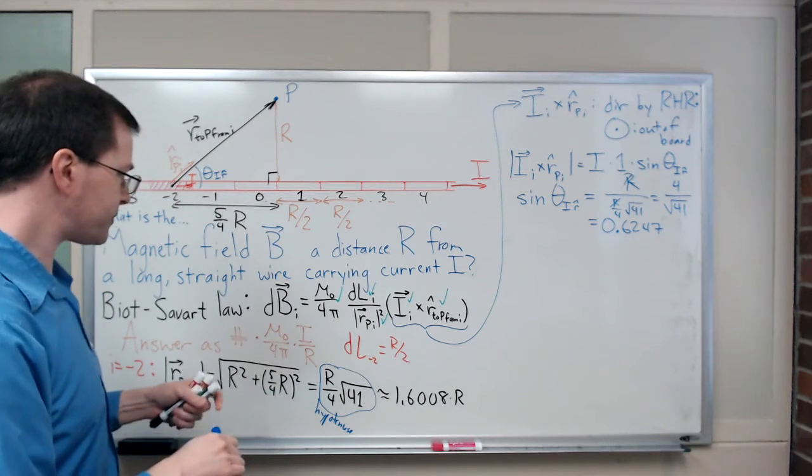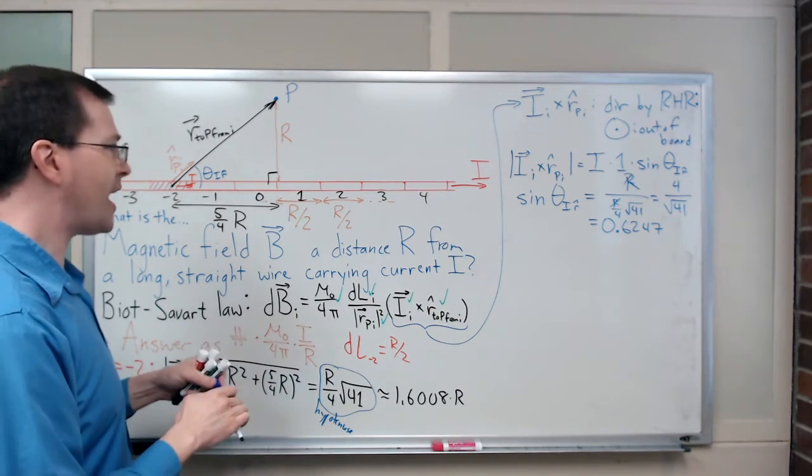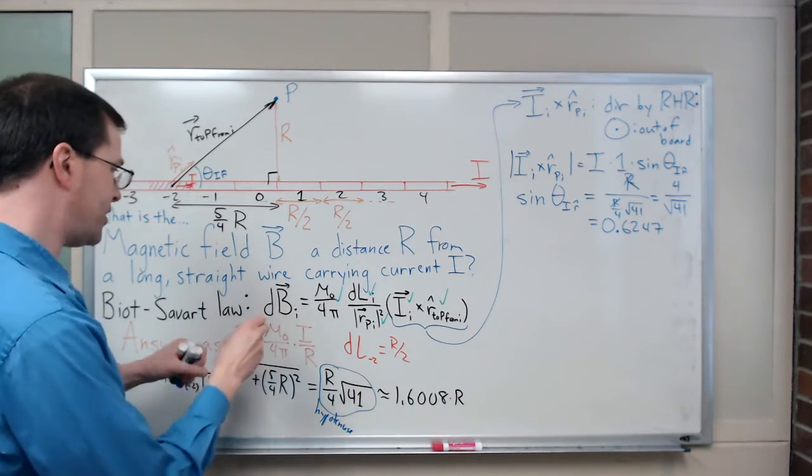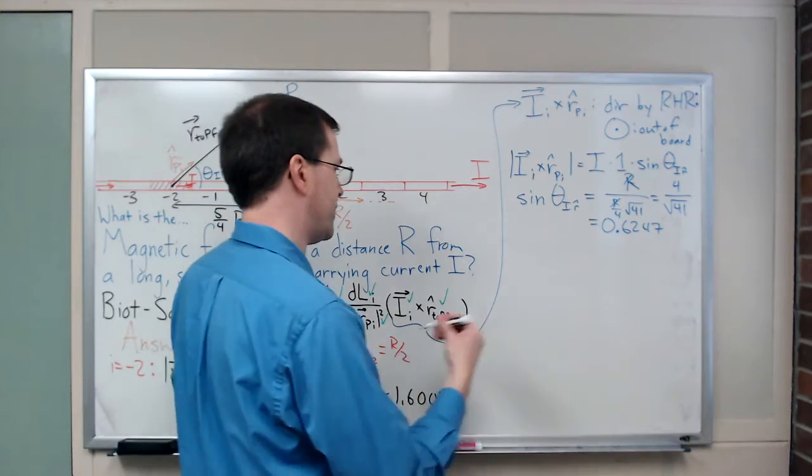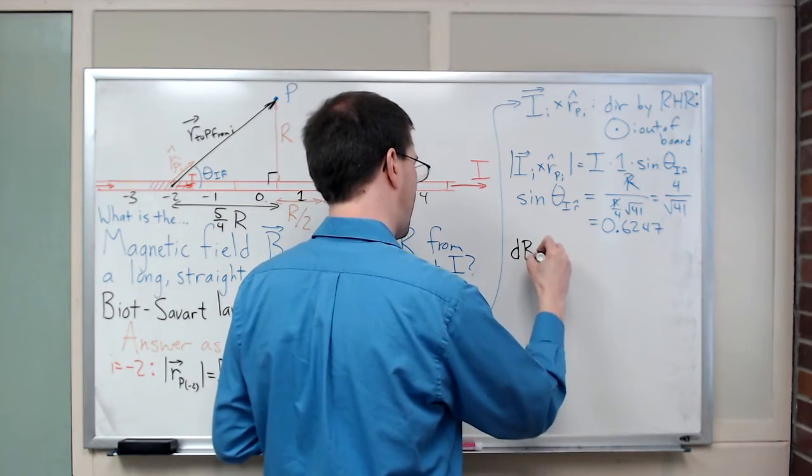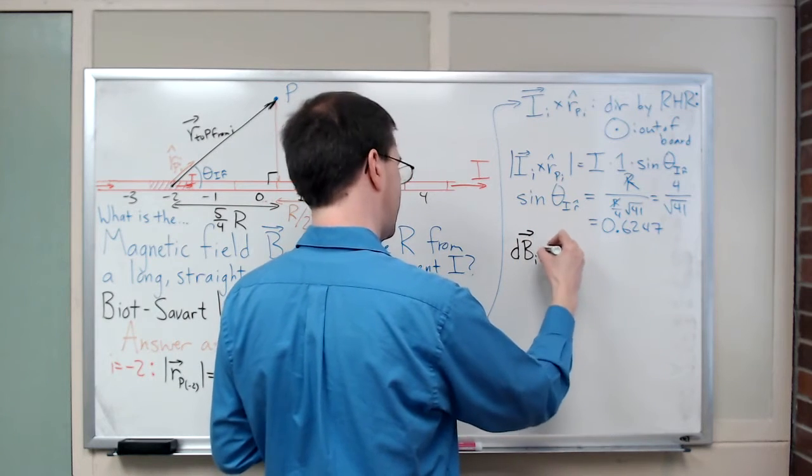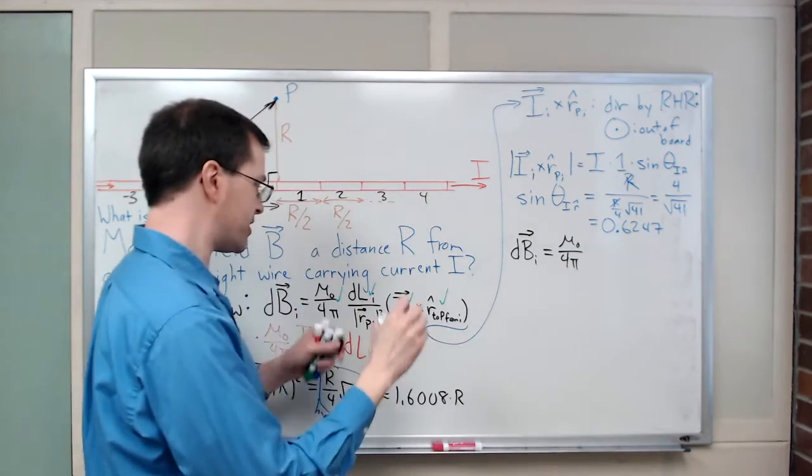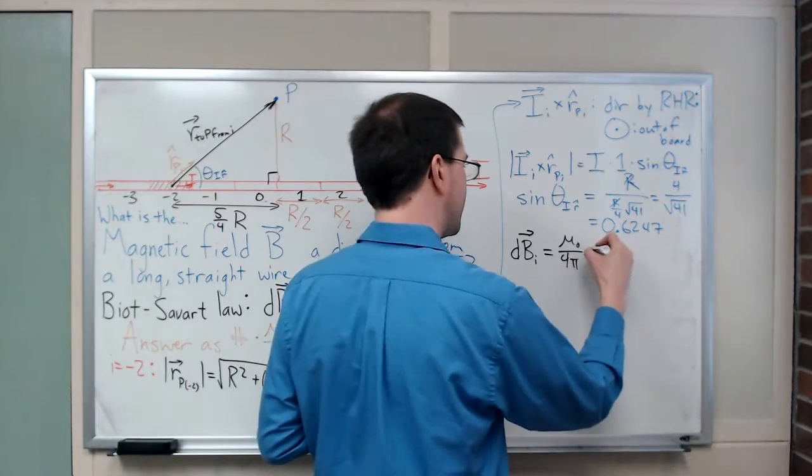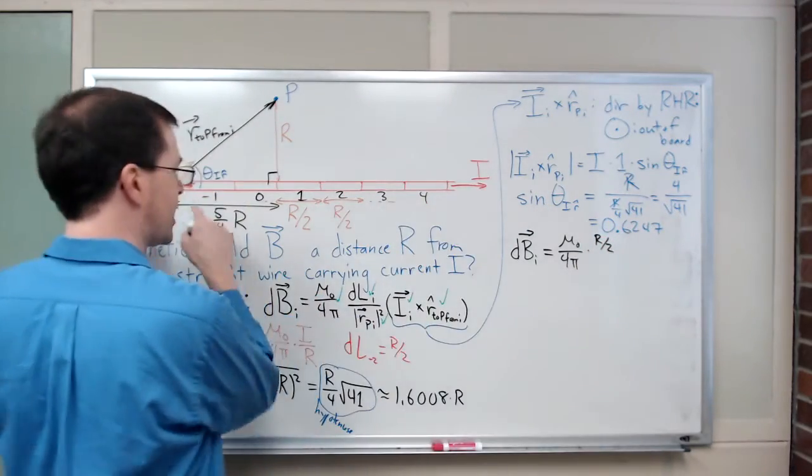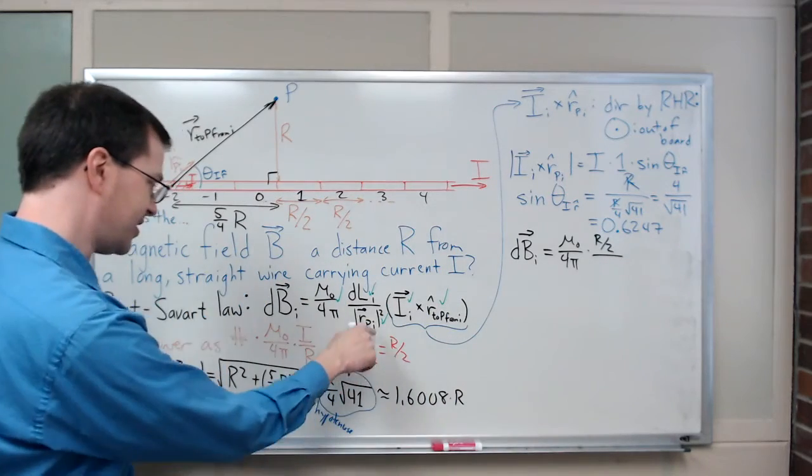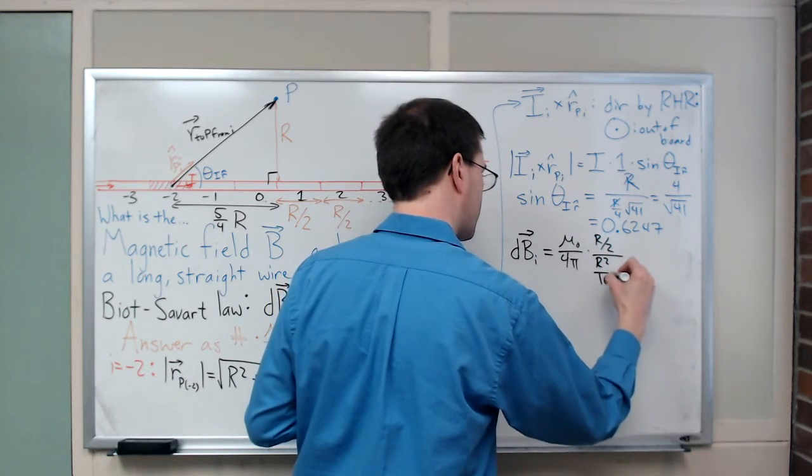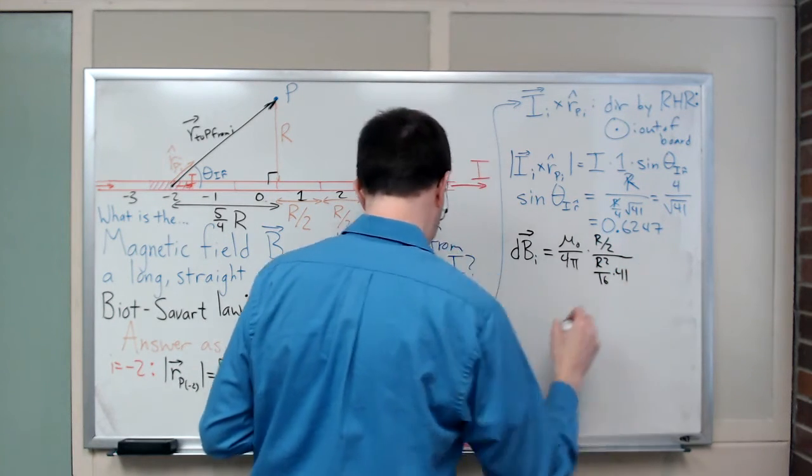That's my sine of theta. If I put this all together, what happens when I put this all together? I know putting this together, I will get dB vector is equal to that mu naught over 4 pi I'm just keeping as a constant up front. The dL is my length, that is R over 2, is the length of my little segment. I'm dividing by this distance squared, so that squared is R squared over 16 times 41.